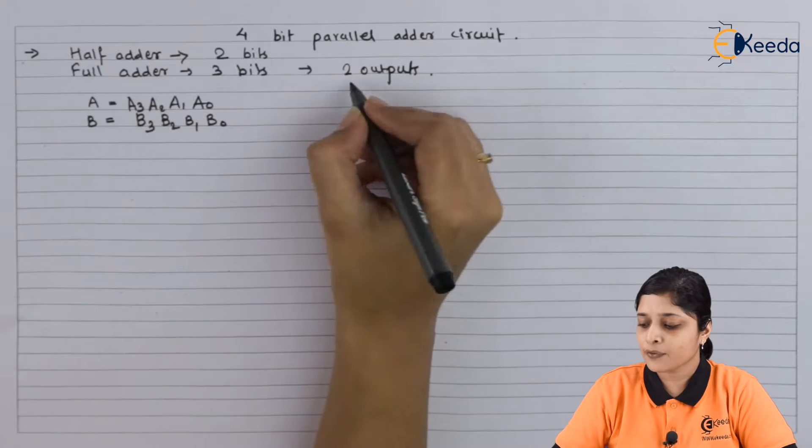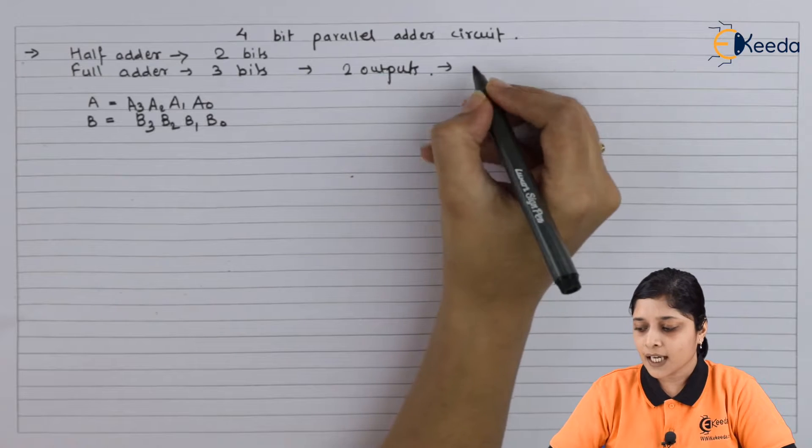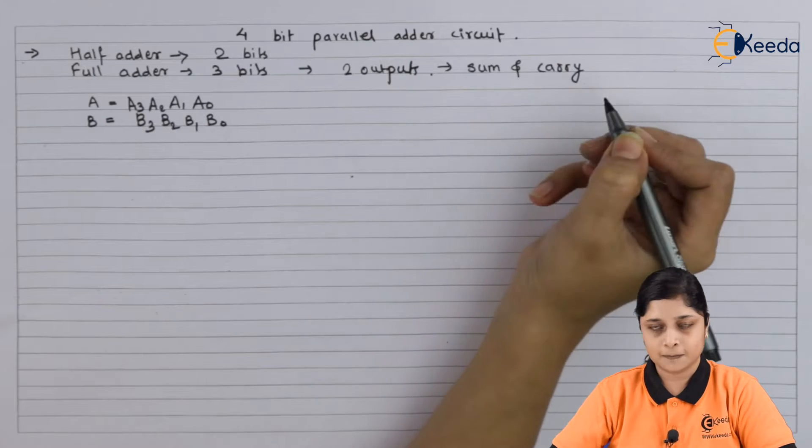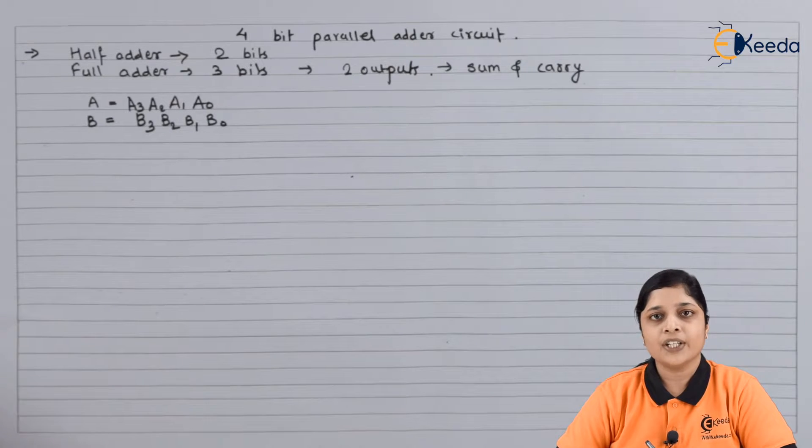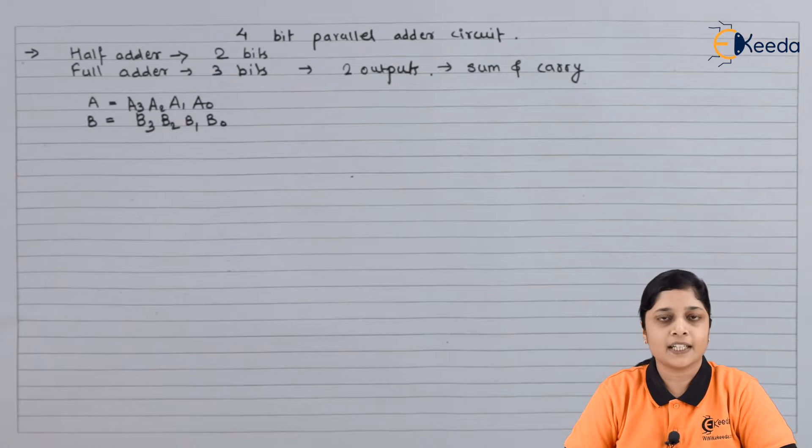If you consider the full adder, it has two outputs: sum and carry. So we will draw here the diagram of full adder for 4-bit addition.